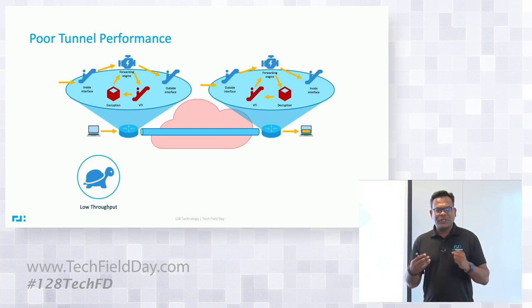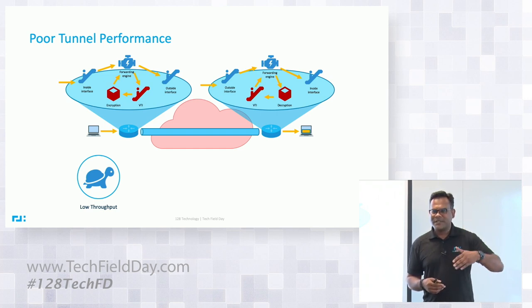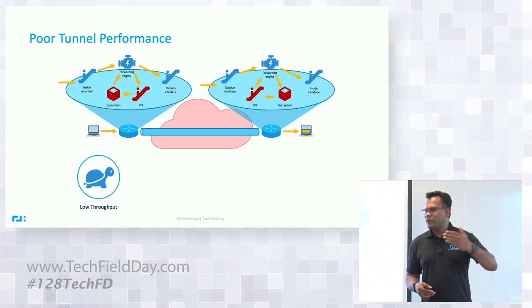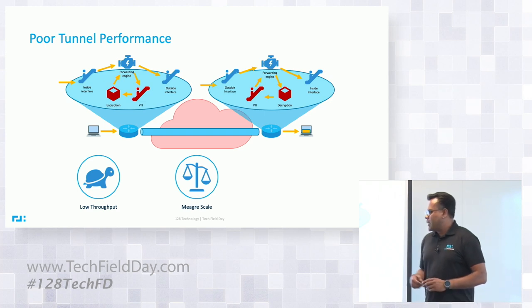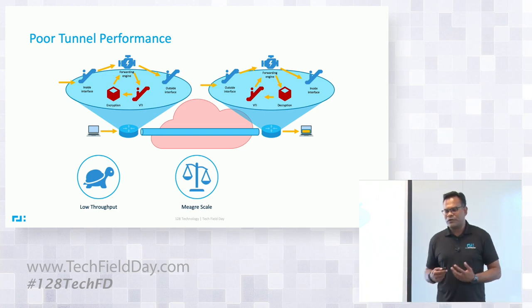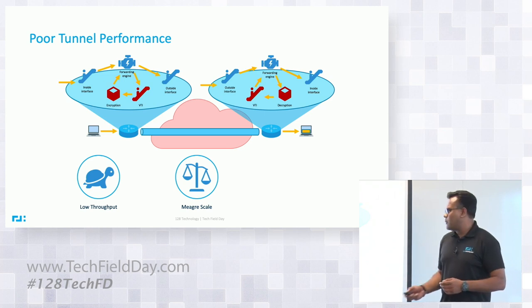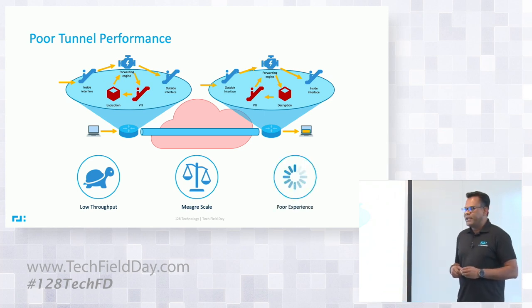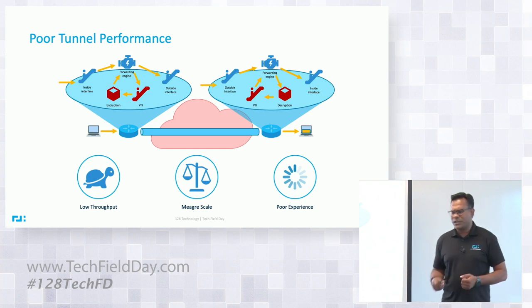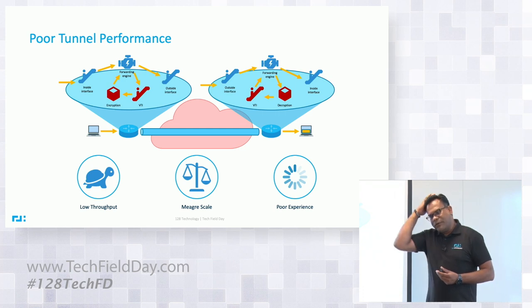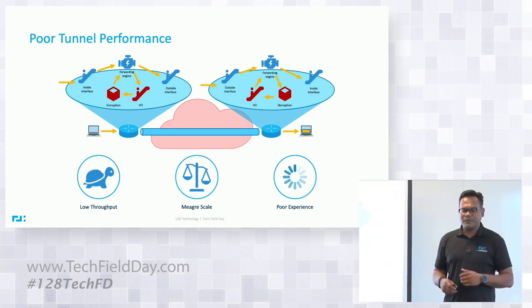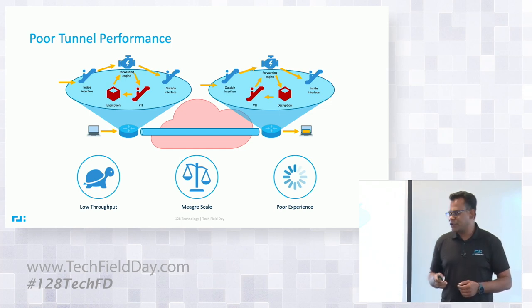If you look at any third-party performance charts for traditional routers, you'll see forwarding without tunnels, then IPsec tunnels, then IPsec with QoS — all of these reduce performance, and there's a big hit when IPsec is enabled. That is why scale is poor — you can't have a full mesh of tunnels, which forces you to go hub-and-spoke. There is also a lot of configuration involved, and you can use DMVPN for creating tunnels on the fly, but that increases deployment complexity.